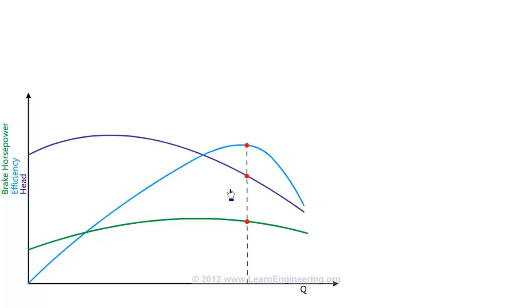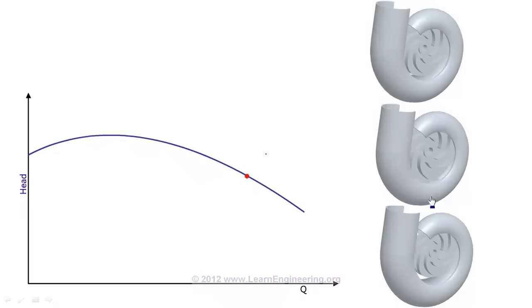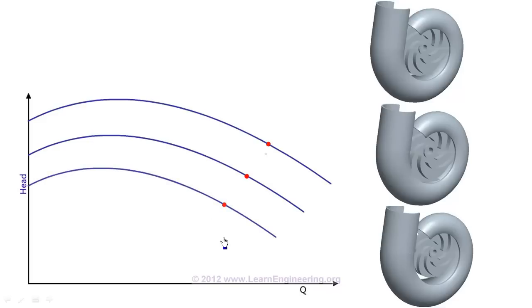For a particular casing, we can fit different sized impellers in it. For a larger impeller, head curve will be like this, and this is the best efficiency point. For impellers of smaller size, head curve will vary like this. Best efficiency points are again marked.